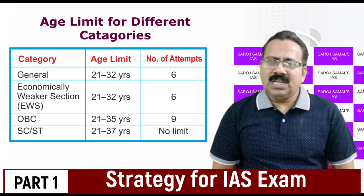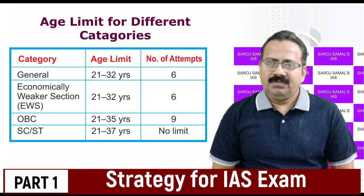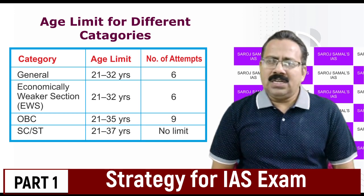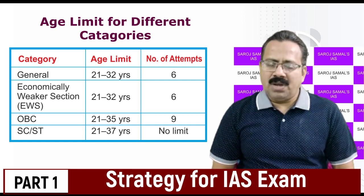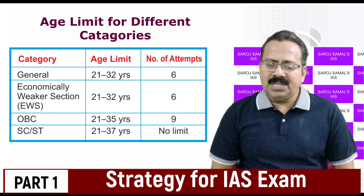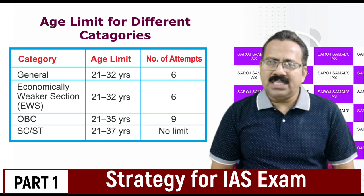For general category candidates, the age limit is 21 to 32 and the number of attempts allowed is 6. Then, for economically weaker section — that is EWS — candidates, the age limit is also the same, that is 21 to 32, and the number of attempts is also the same, that is 6. So there is no relaxation either in the age limit or in the number of attempts for students belonging to the EWS category.